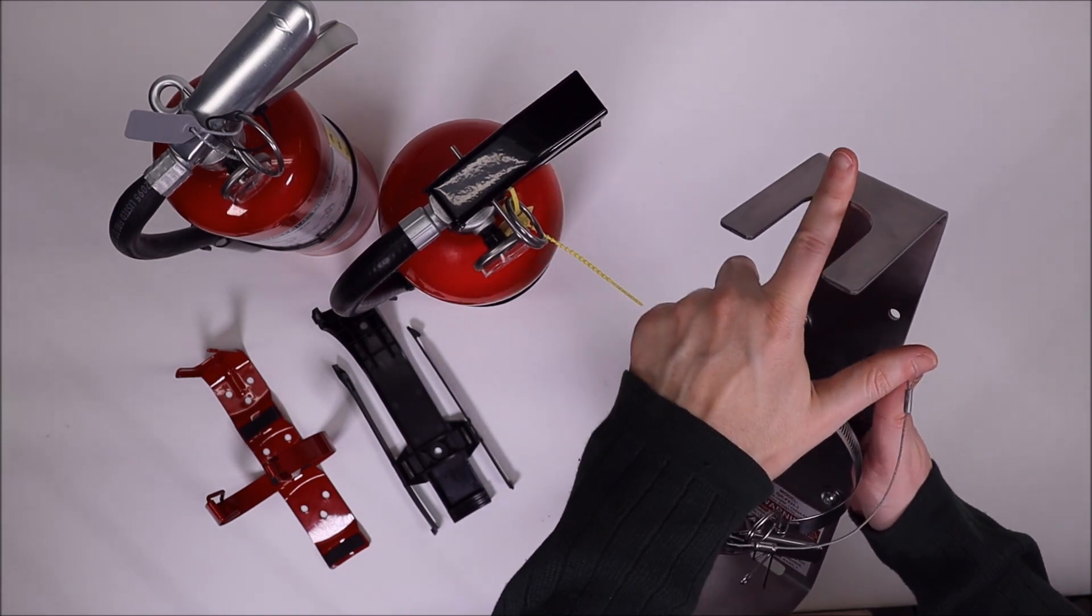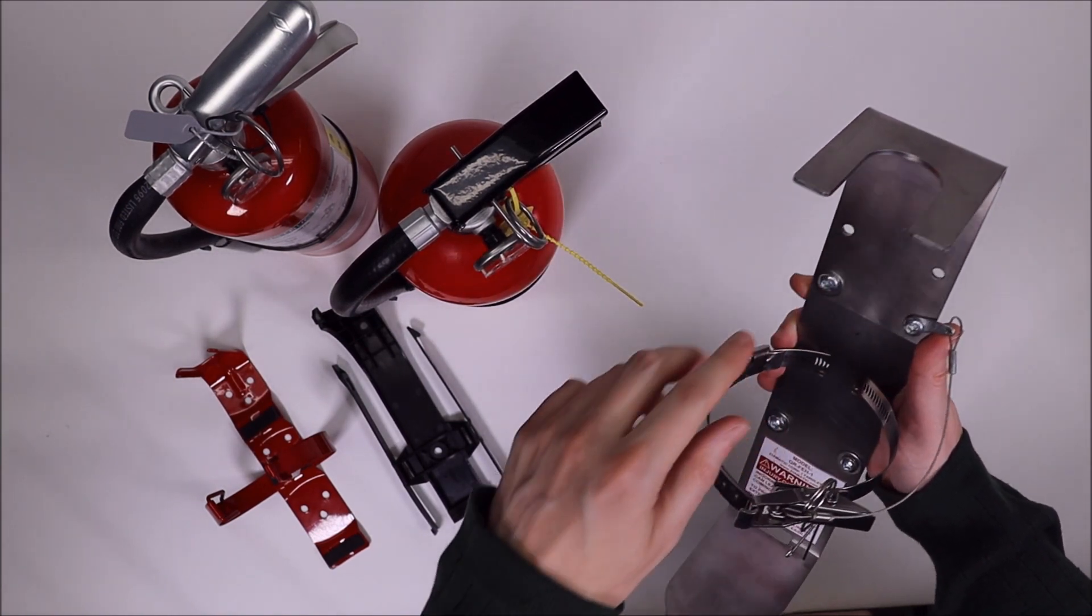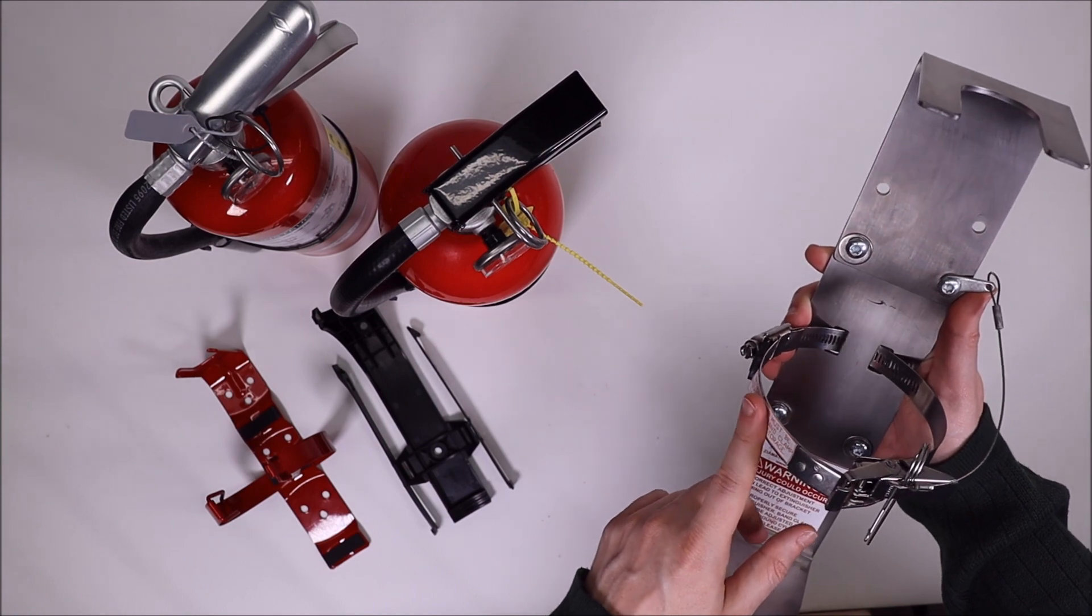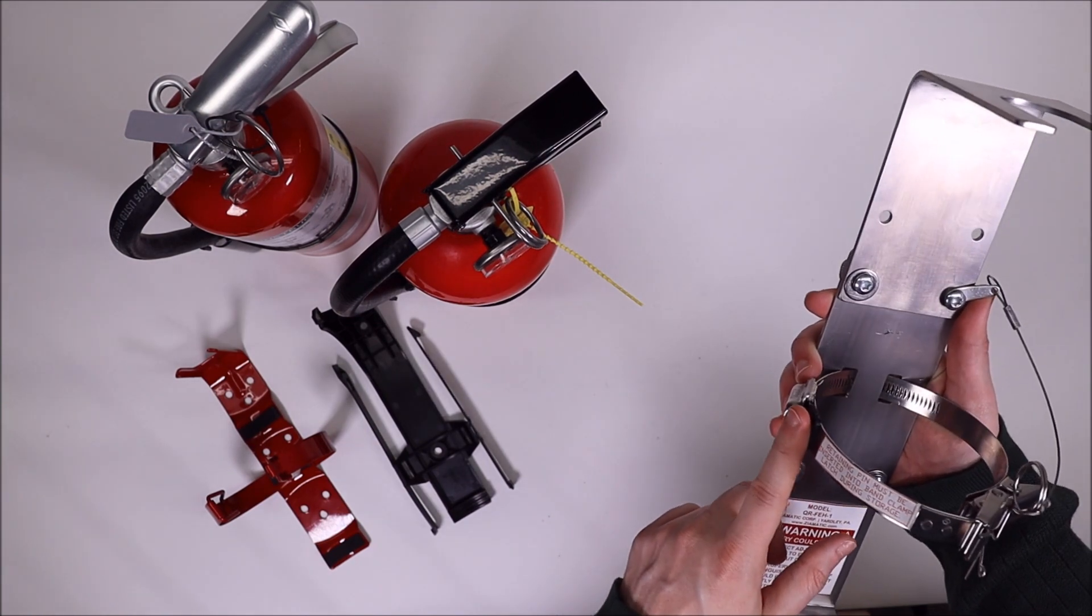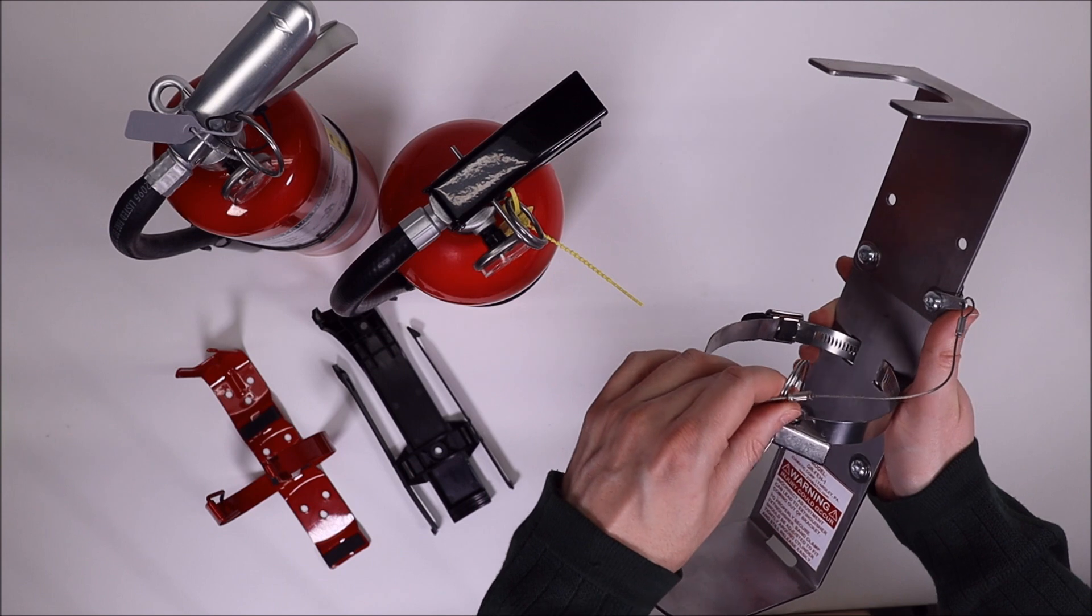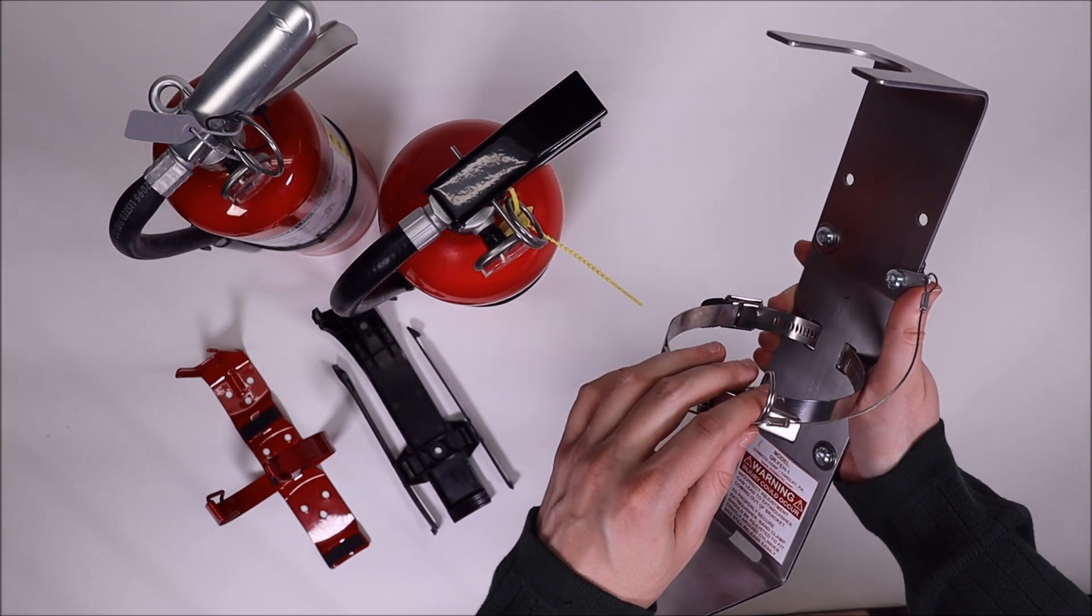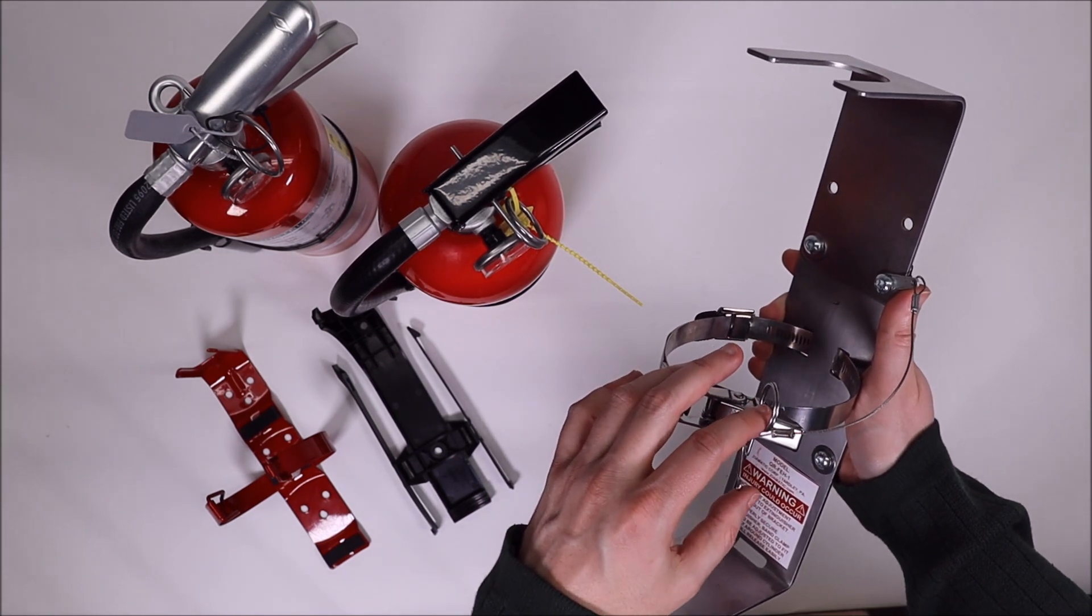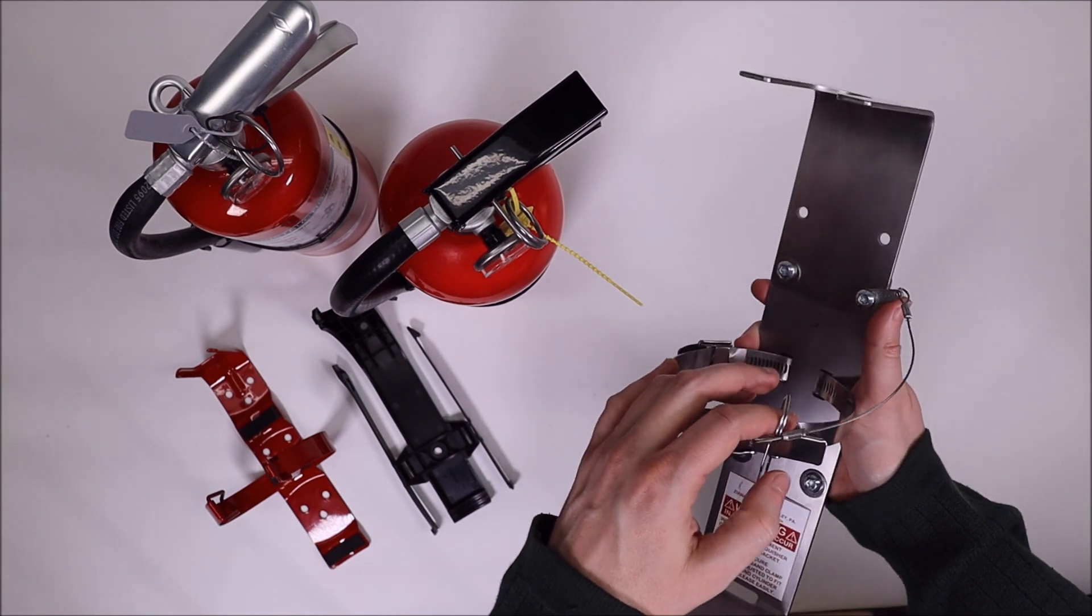The neck of the extinguisher rests in the retainer here. Band clamp grips the cylinder. It's adjustable. You have a specially designed security pin, so no matter how you have this mounted, it's going to hold your latch closed until you need it.